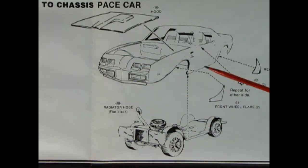So panel 14 is actually for the pace car version which includes the hood going onto the chassis again with that radiator hose, but this time around there's sport mirrors and rear and front wheel flares that glue on the sides.